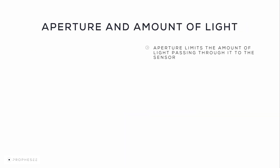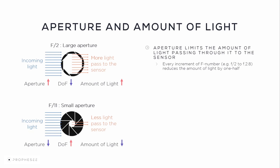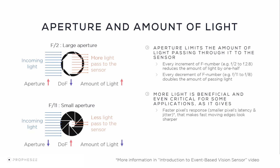It is important to take into account that the aperture limits the amount of light passing through to the sensor. For example, comparing a large aperture F2 and a small aperture F11: a large aperture allows passing more light but decreases the depth of field, whereas a small aperture allows very little light but increases the depth of field greatly. Usually the aperture range is marked on the lens, and every increment of the F number, for example F2 to F2.8, reduces the amount of light by one half, and every decrement, from F11 to F8, doubles the amount of passing light. Please take into account that more light is beneficial and even critical for some applications, as it gives faster pixel responses, smaller pixel latency and jitter, making fast moving edges look much sharper, and less background noise. More information on the sensor functionality and its KPIs can be found in the Introduction to Event-Based Vision Sensor video and the Sensor Data Sheet.